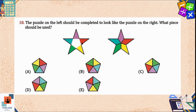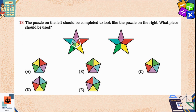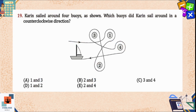Rotating option A a little bit to fit it into the star, only the red color matches with red — the rest of the colors do not match — so option A is not correct. Now rotating option C and fitting it into the star, all the colors match with each other. So option C is the correct answer.